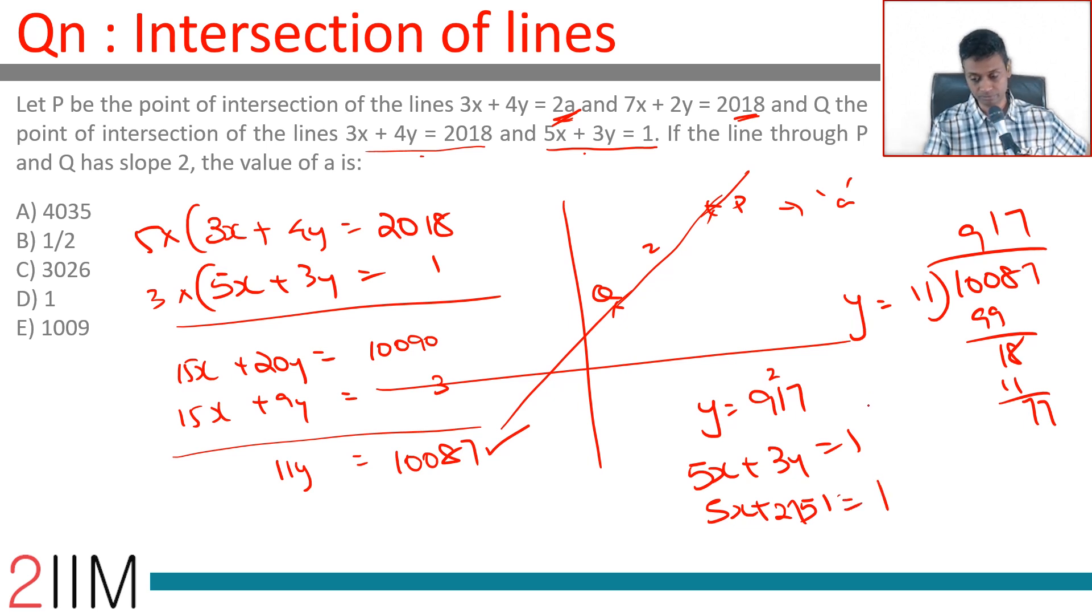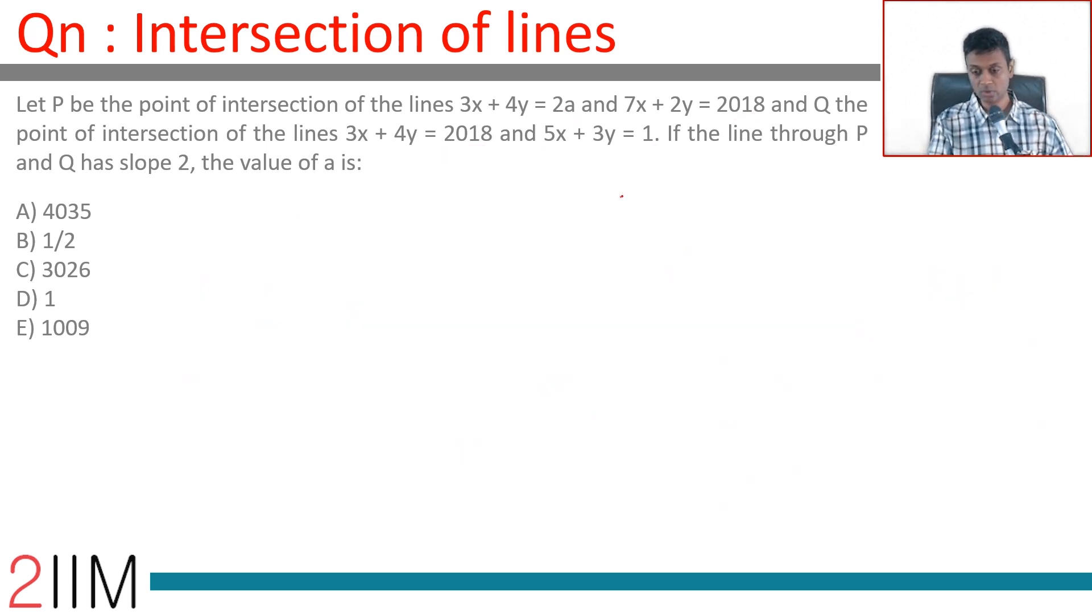5x + 3 times 917 equals 1, or 5x = -2750, so x = -550. Q is the point (-550, 917).